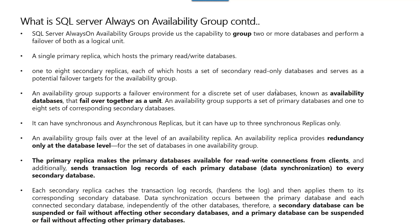The primary replica makes the primary database available for read-write connections from the client so that the client can still work on the primary replica reading and writing the data. This primary replica sends the transaction logs of the primary database to the secondary database, so the secondary database can replicate the transactions happening on the primary databases.